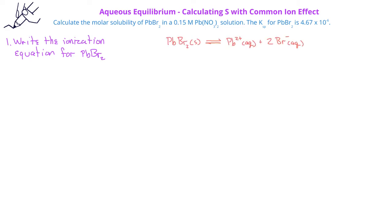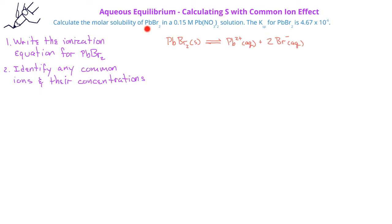So we get: solid lead-2 bromide is in equilibrium with lead-2 plus (aqueous) and 2 aqueous bromide ions. Next, we identify the common ion and its concentration. The lead-2 plus ion is present in both lead-2 bromide and lead-2 nitrate. Since lead-2 plus is in a 1-to-1 mole ratio with lead-2 nitrate, the concentration of lead-2 nitrate also equals the initial concentration of lead-2 ions in the ionization equation.